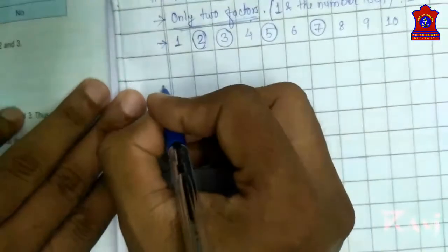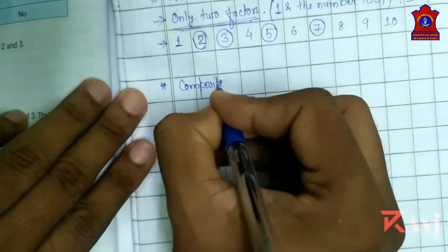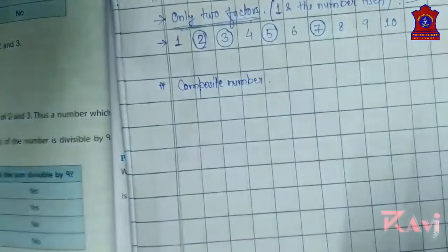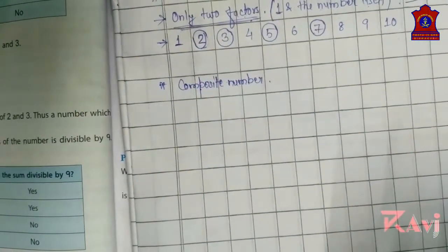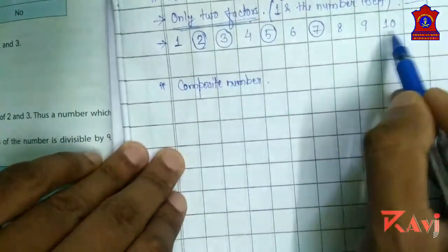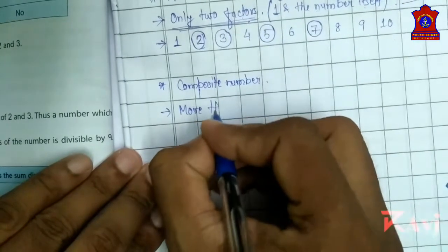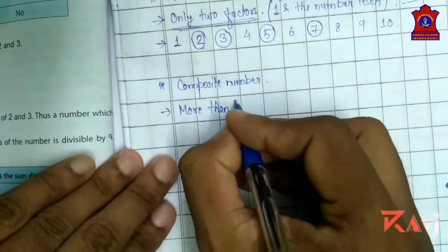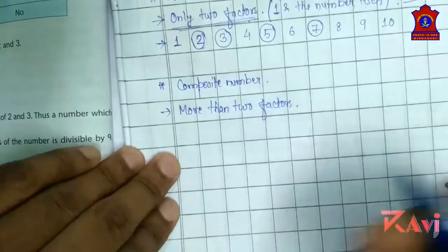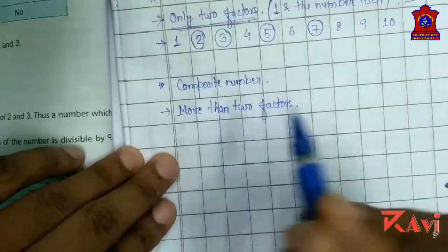Now we are going to move to composite numbers. What is a composite number? A composite number has more than two factors — it can be 3, 5, 10, or any number of factors greater than two.